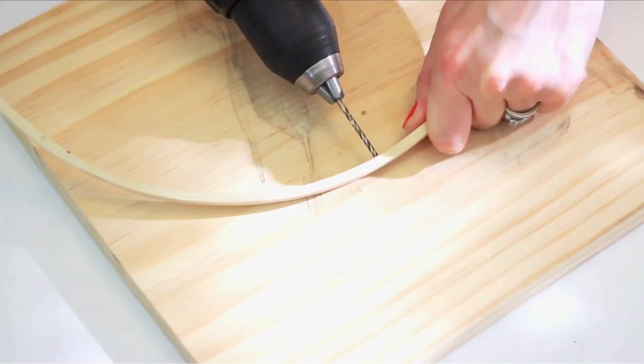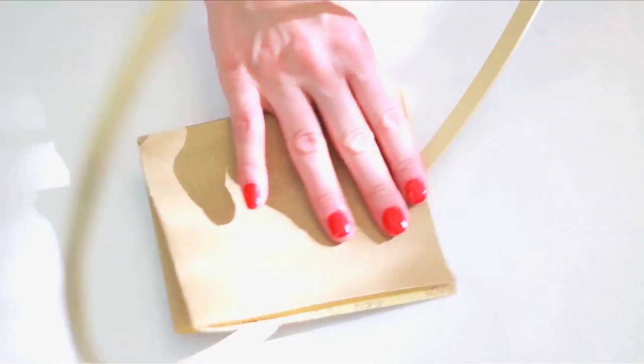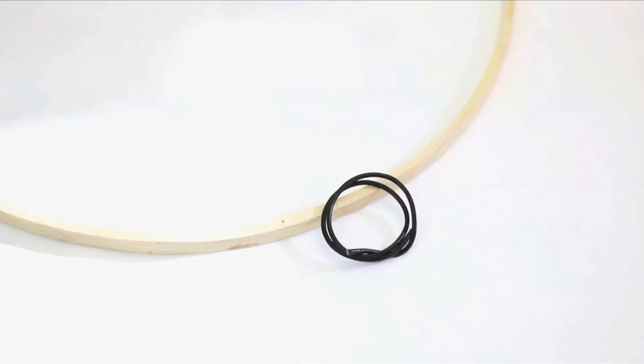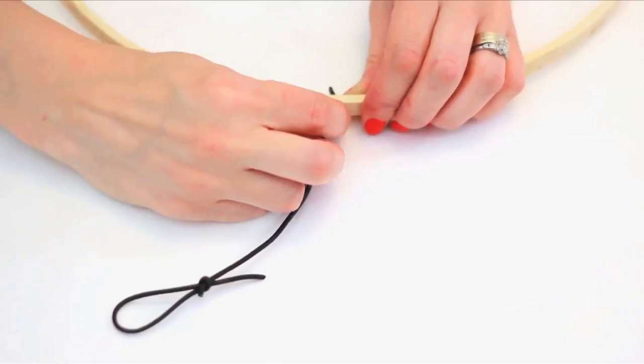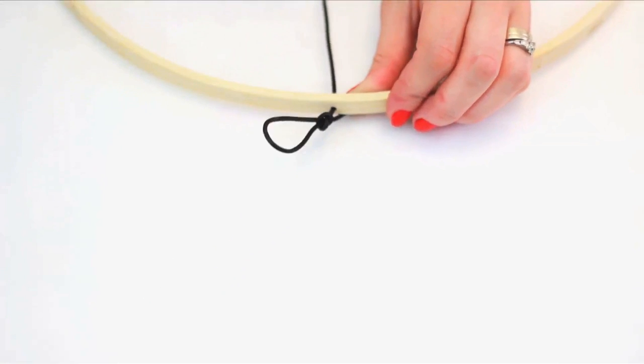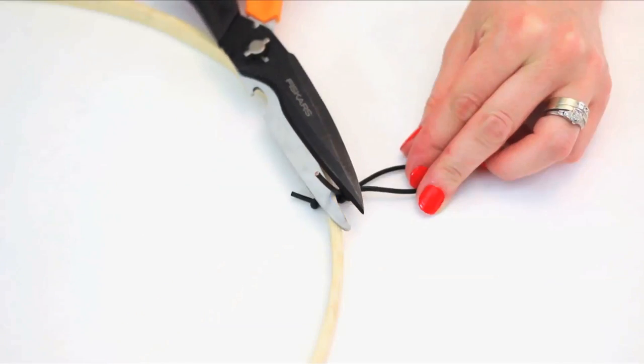Locate the top point of the hoop and drill a small hole. Sand to smooth. Create a hanger with your leather cord. First make a loop and tie it really tight. Feed through the hole with the loop on top. Knot underneath to secure and cut off any excess cord.